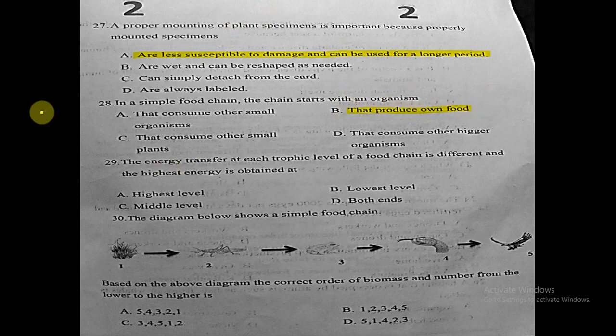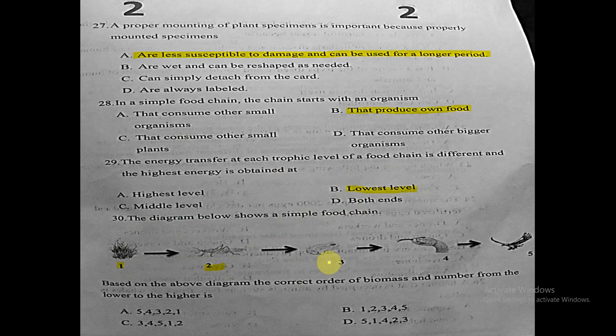Question twenty-nine: the energy transfer at each trophic level of a food chain is different, and the highest energy is obtained at the lowest level — which contains plants.